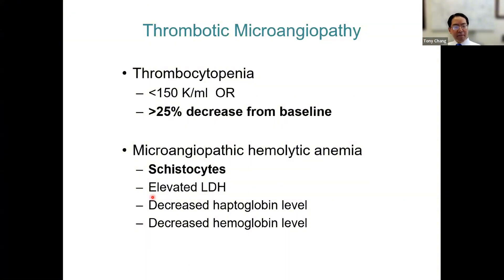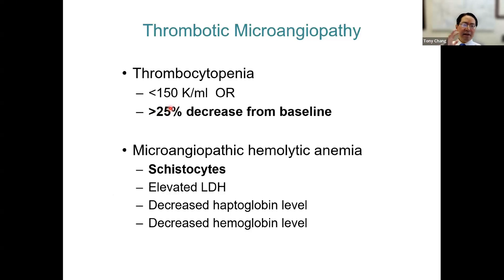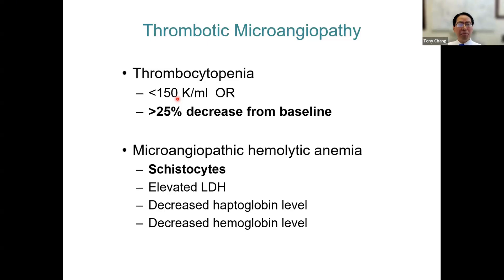The clinical criteria for TMA require thrombocytopenia and evidence of microangiopathic hemolytic anemia. One real pitfall is that people overlook relative thrombocytopenia. If your platelet count goes from 400,000 to 200,000, that's a substantial consumption of platelets, but it doesn't show up in the electronic medical record as thrombocytopenia. You really want to look at trends. We've seen cases where patients have a platelet count of 120 or 110, and everyone thinks that's not so bad — and that's the pitfall, you're going to miss out on this criterion.